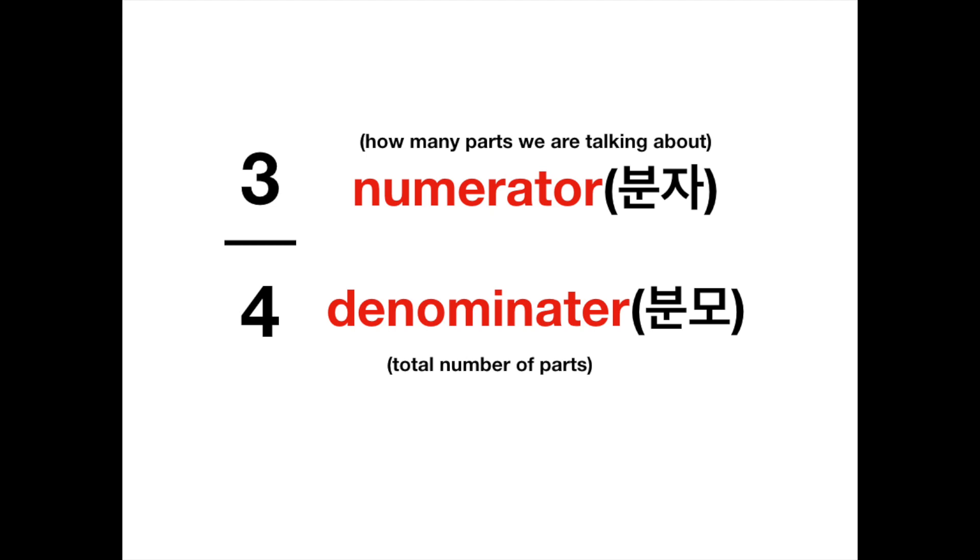We use cardinal numbers for a numerator. And cardinal numbers are one, two, three, and four. 하나, 둘, 셋, 넷 in Korean. We use ordinal numbers for denominator. Ordinal numbers are first, second, third, and fourth. 첫 번째, 두 번째, 세 번째, 네 번째 in Korean.